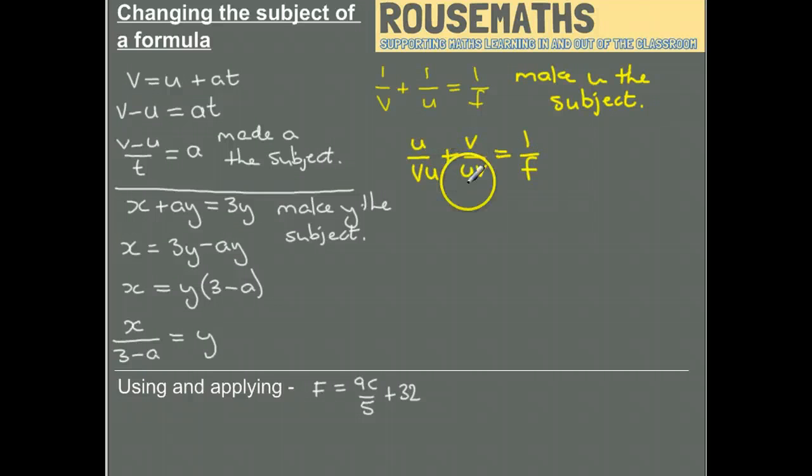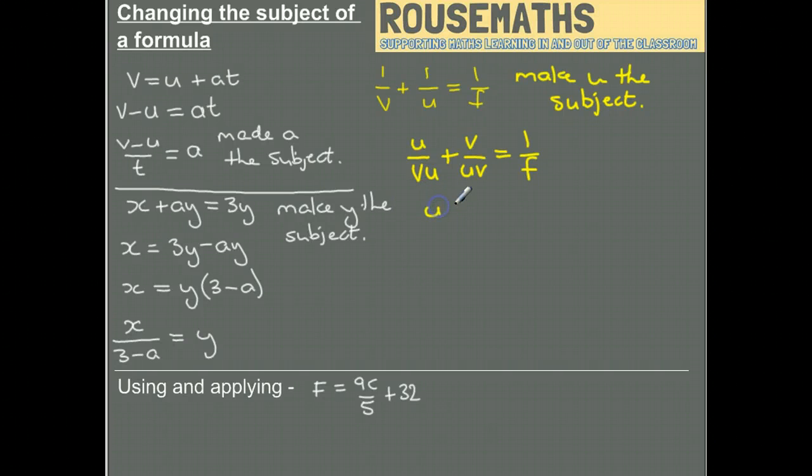So if I just combine them together, I have this. Now I'm going to do some multiplying and multiply both sides by uv to cancel out the uv on the bottom, but at the same time I'm also going to multiply both sides by F to cancel out this on the bottom.